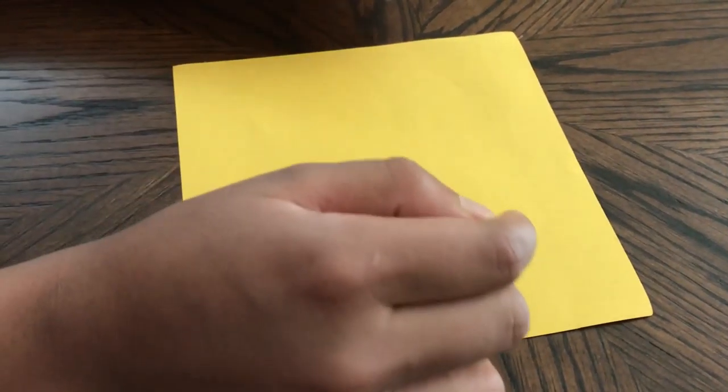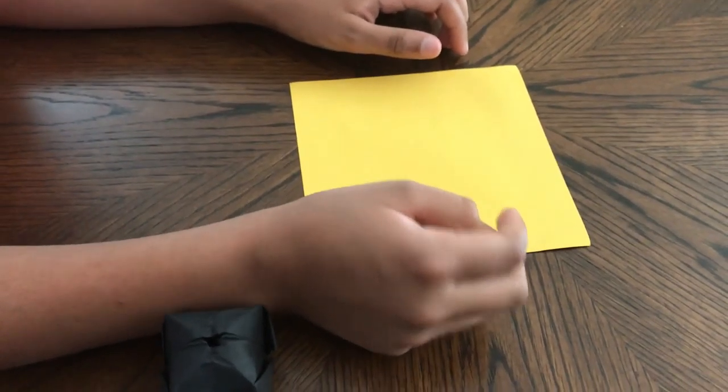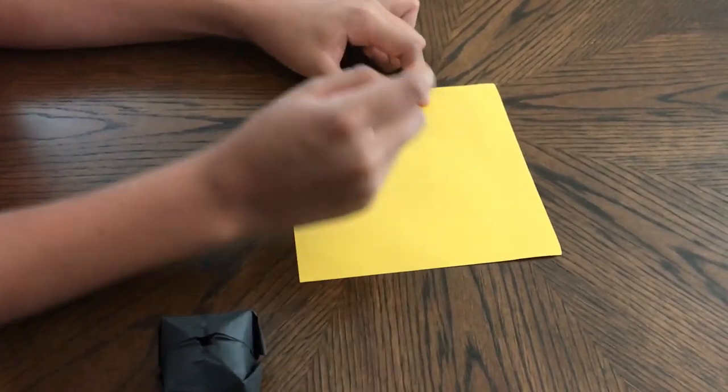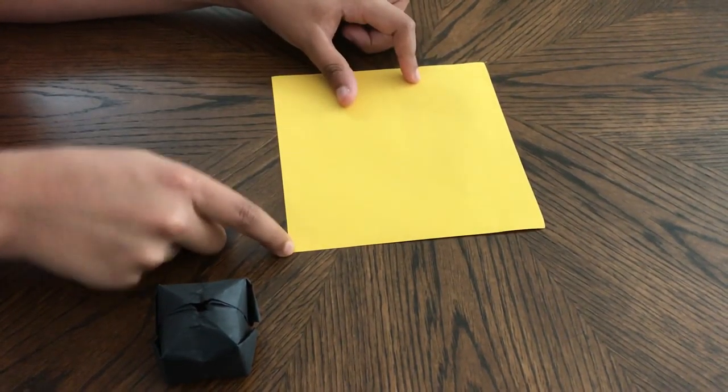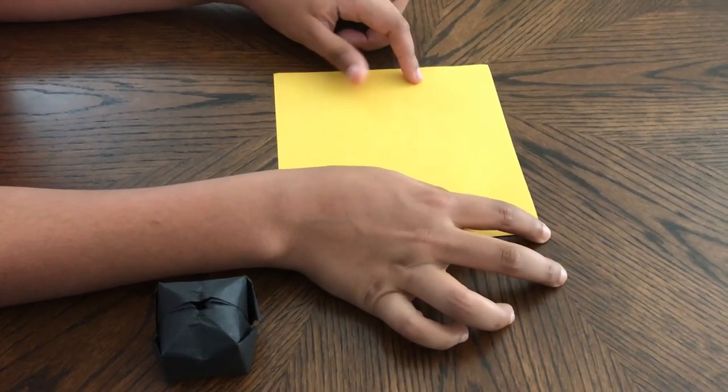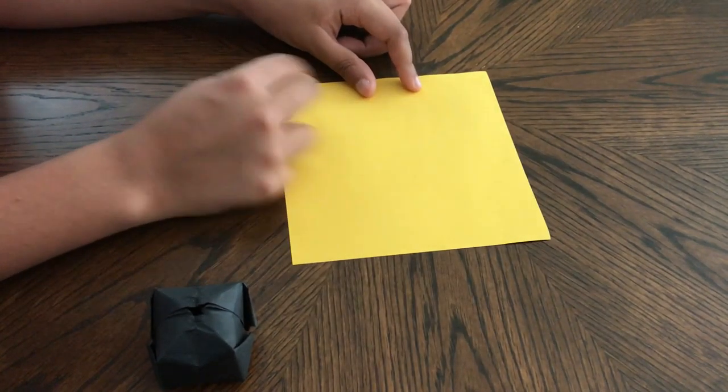To make this model, you're going to need one square sheet of paper. The first fold you're going to make goes from this corner to this corner so that this corner lines up with that corner.